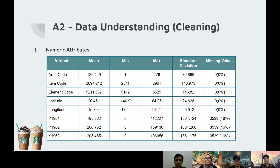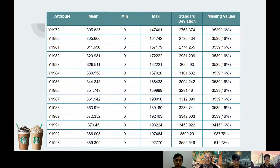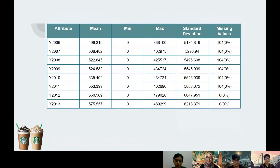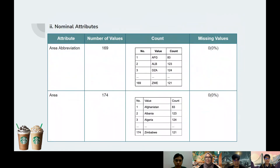For data understanding, which is scaling, we have approximately 57 numeric attributes — and this is the list over here, we have 57 of them. For nominal attributes, we have approximately 5 of them.